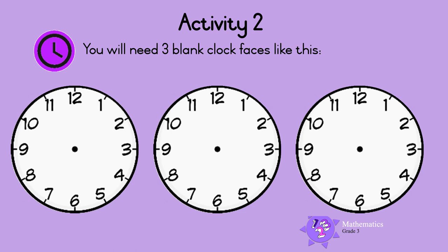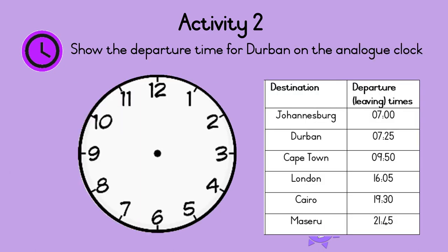Activity 2. You will need three blank clock faces like this. Show the departure time for Durban on the analog clock. Let's do this together.